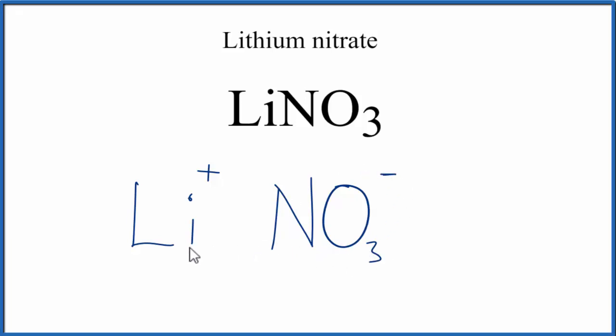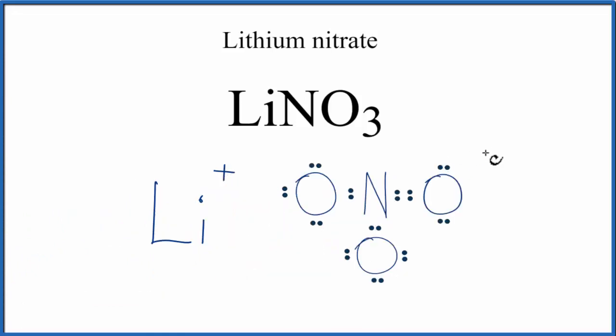Let's replace this with a Lewis structure for the nitrate ion. And remember, we said the nitrate ion had a negative charge. It got that electron from the lithium.